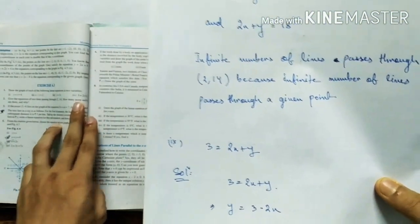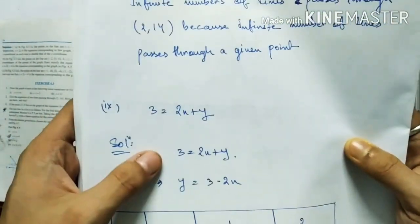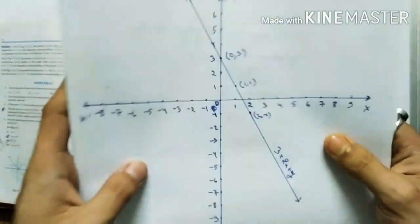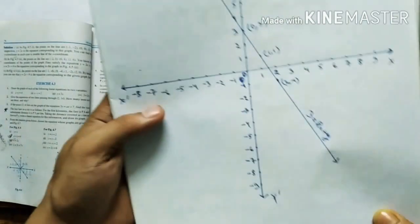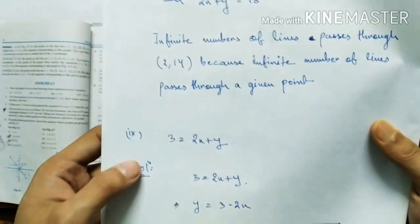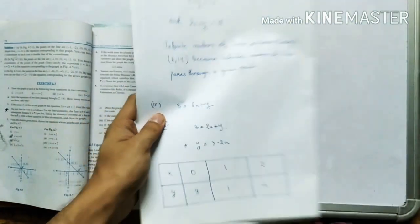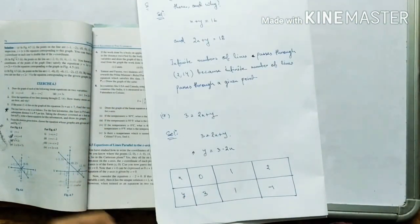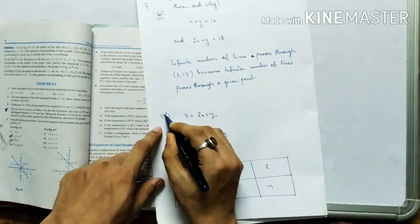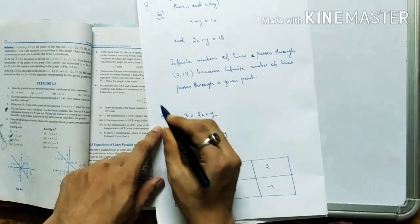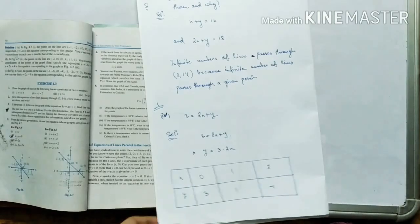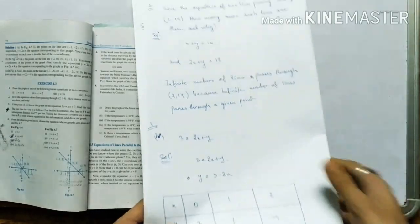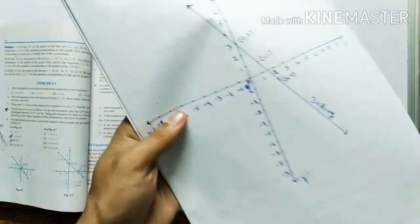Question Number 4's graph has already been given to you in the notes. This is the graph of that equation — it is Number 4, Type 1.